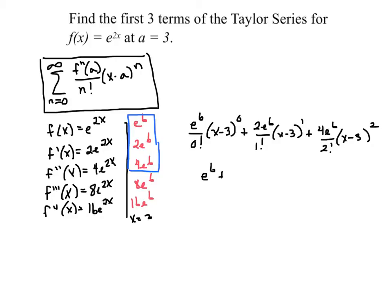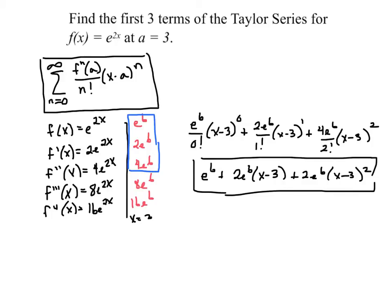Then we've got 2e to the 6th times x minus 3. 4 over 2 factorial is 2, so 2e to the 6th times x minus 3 squared. So there it is. This is the first three terms of the Taylor series for e to the 2x at a equals 3.